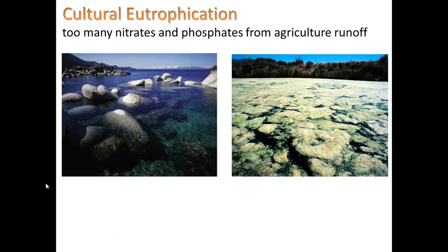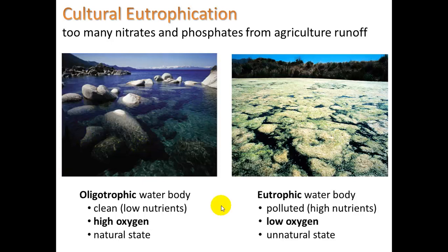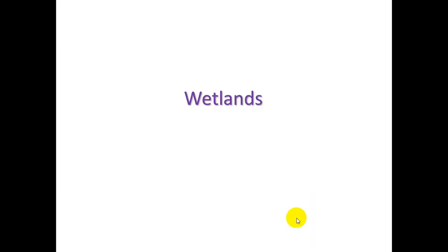Cultural eutrophication happens in many waterways when there are too many nitrates and phosphates. We call it cultural eutrophication because it comes from our civilization doing agriculture. On the left we have an oligotrophic water body — clean, low nutrients, high oxygen, the natural state. On the right we get eutrophic — polluted with high nutrients — where we get too much growth followed by too much decomposition, which uses up the oxygen. It's a very unnatural state.